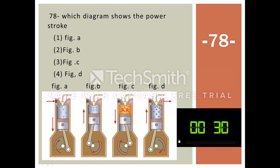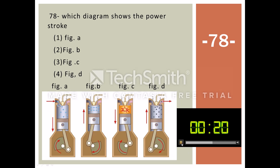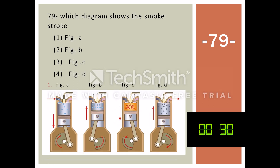Question 78. Which diagram shows the power stroke? Question 79. Which diagram shows the exhaust stroke? Options: Fig C, Fig D.